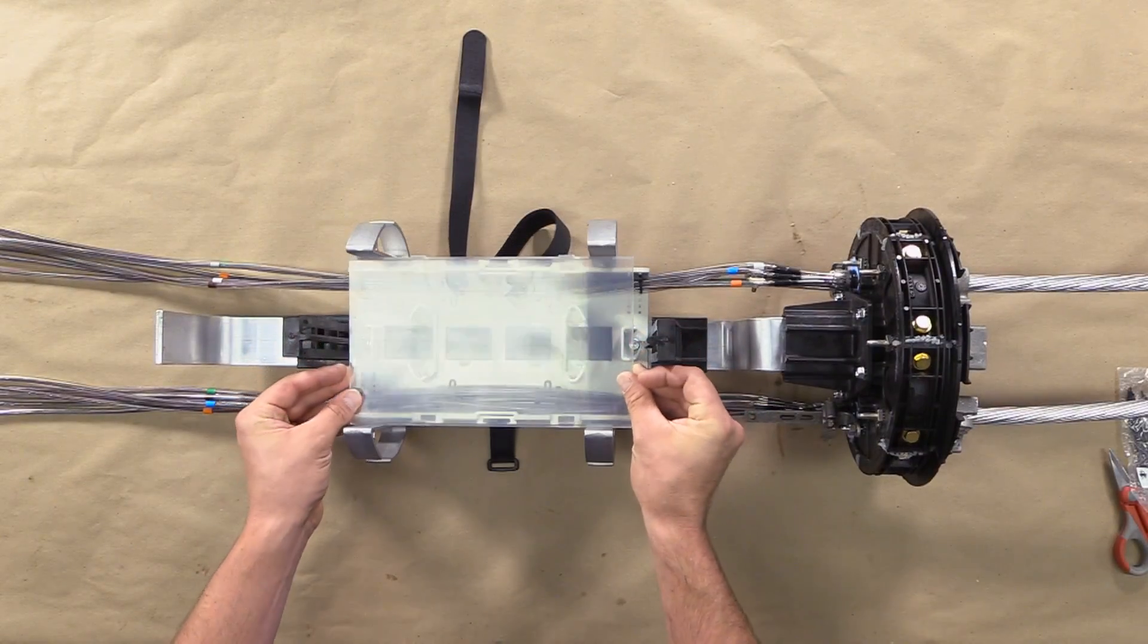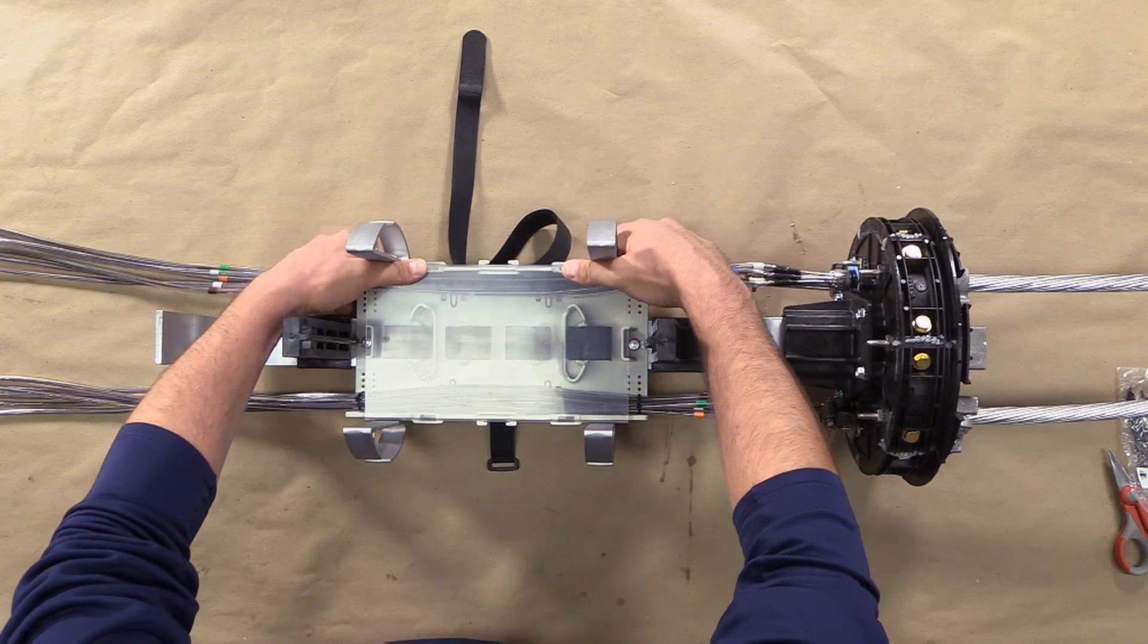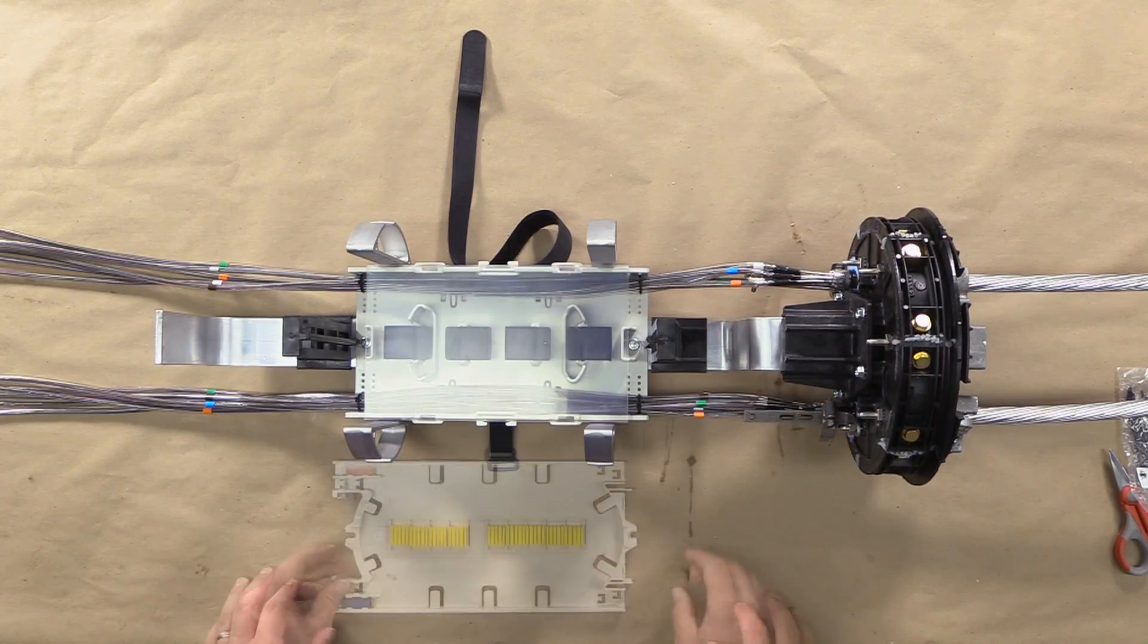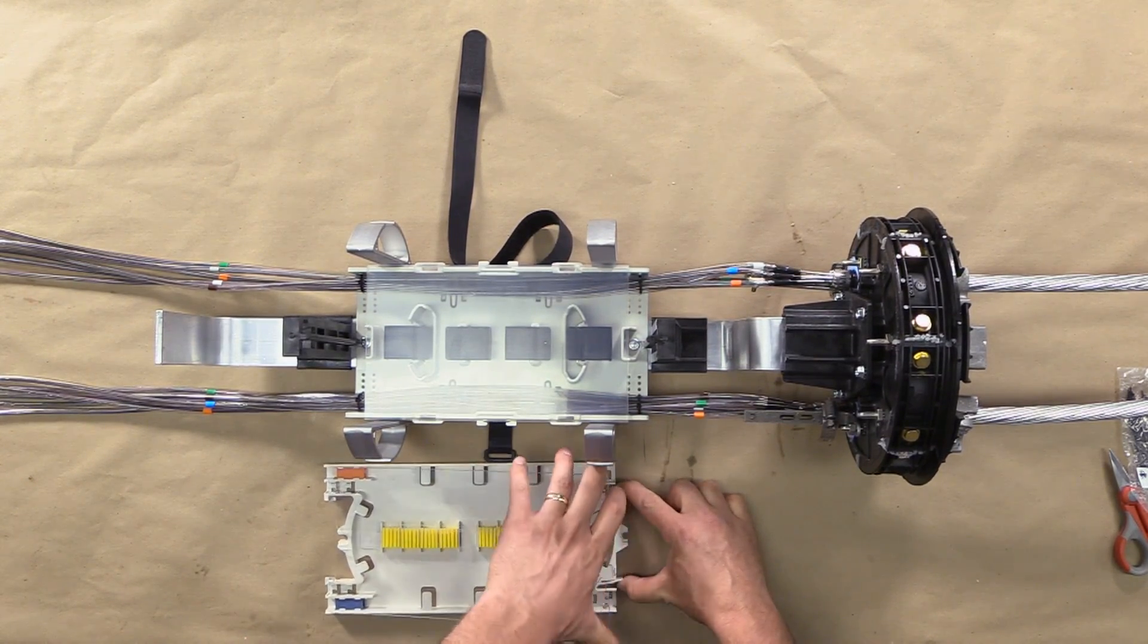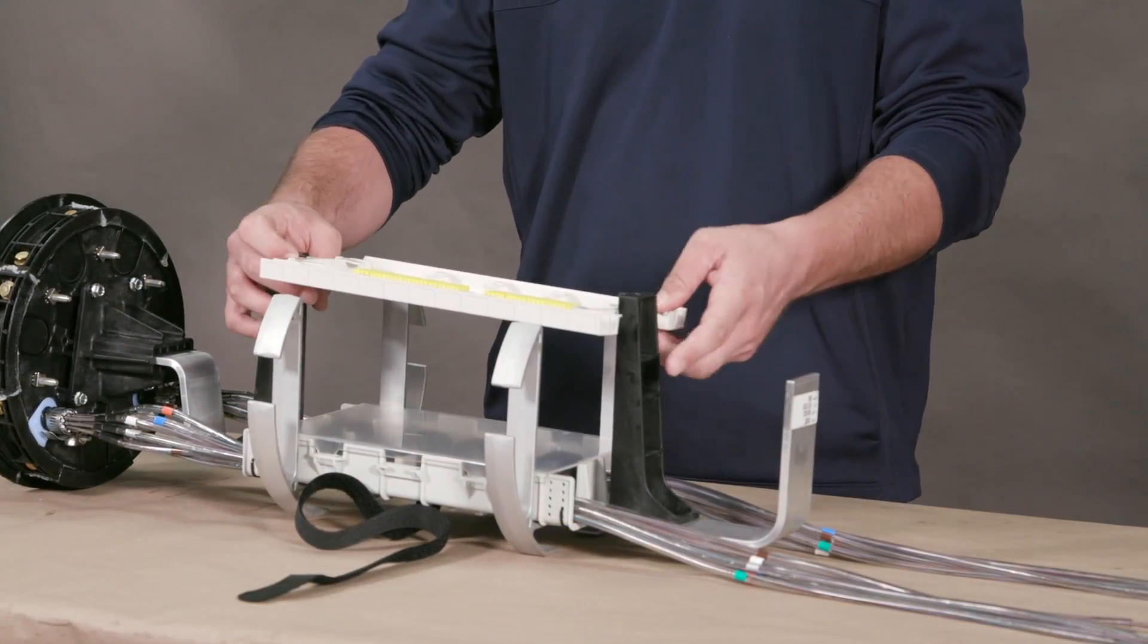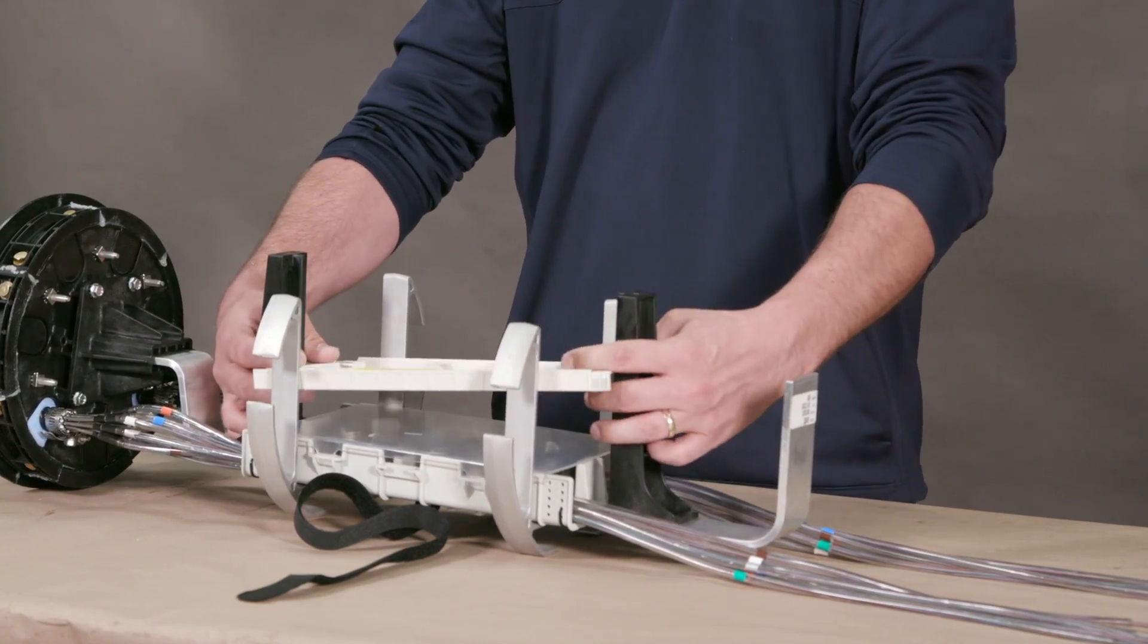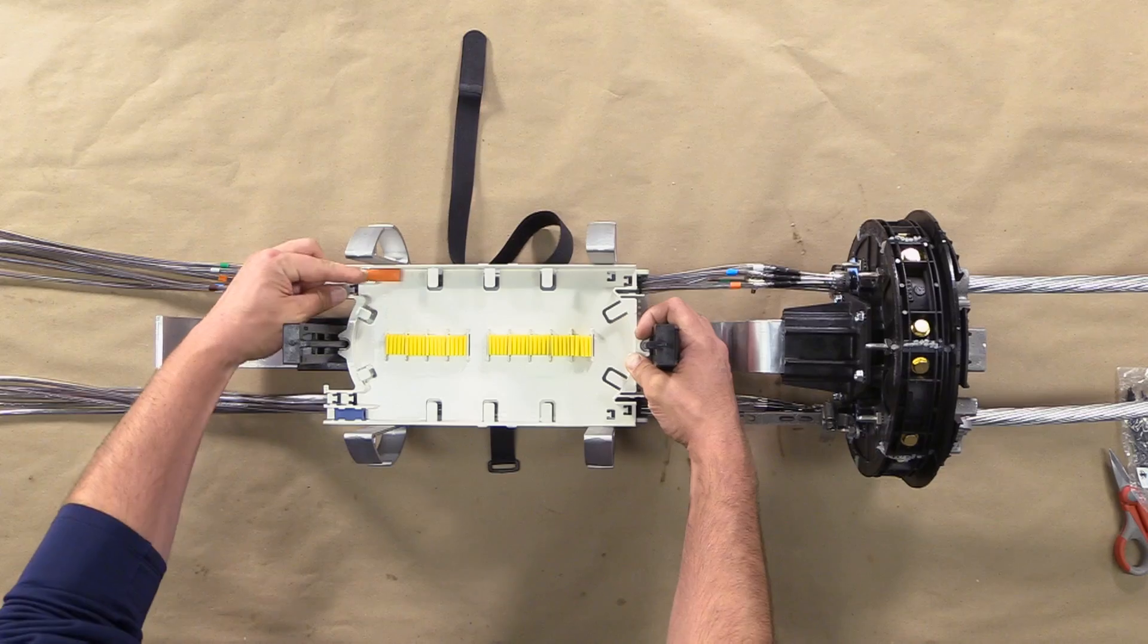Reinstall the transition tray cover. Remove splice tray cover and place tray directly over the transition tray. Remove the retention blocks and route transition tubes into the tray.